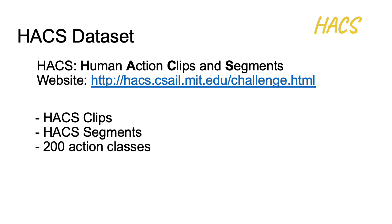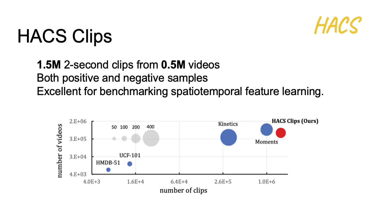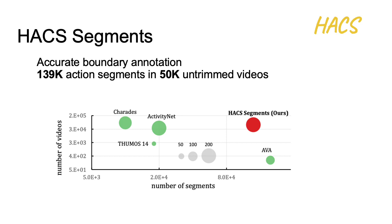This video dataset comes from YouTube. HACS Clips is a dataset that contains 1.5 million 2-second video clips from 0.5 million videos. It contains both positive and negative samples, so it is excellent for benchmarking spatial-temporal feature learning. HACS Segments is a dataset for action localization and detection tasks. It has accurate boundary annotations on 50K untrimmed videos. In total, there are 139 action categories annotated.